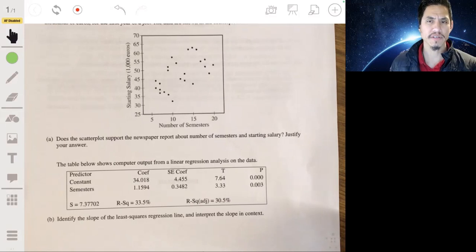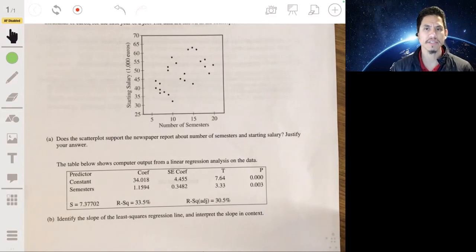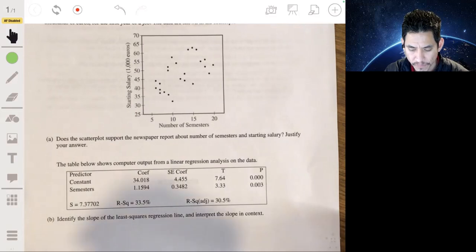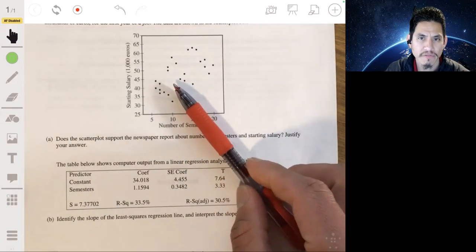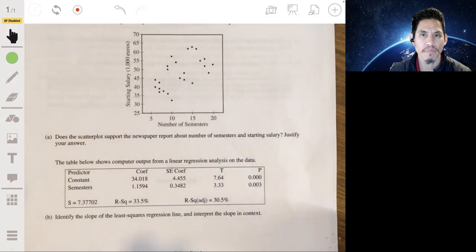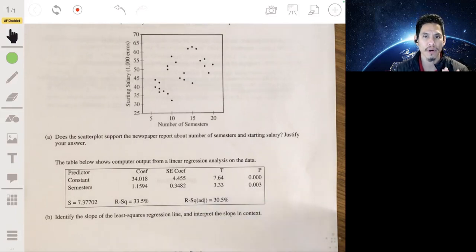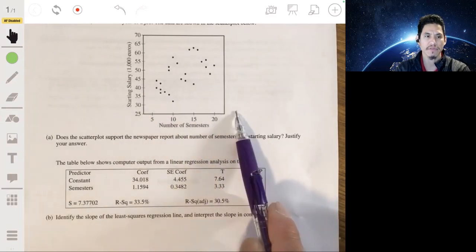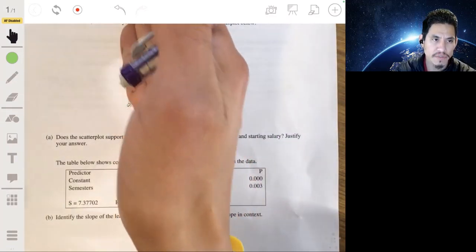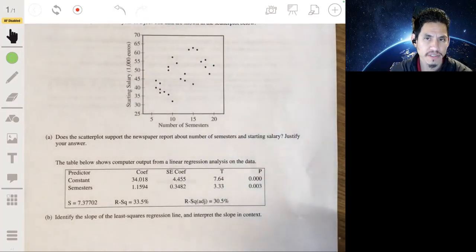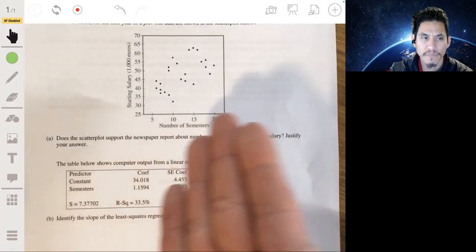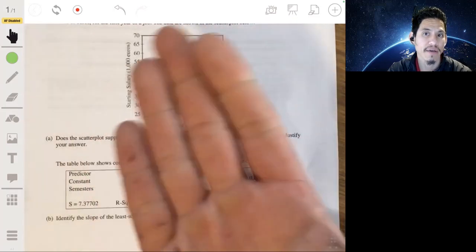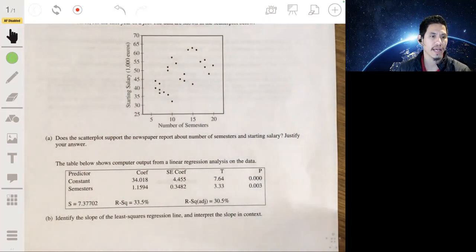All right, so essentially this is just assessing if you understand that this graph shows the trend or an association between two variables. We call the x variable the explanatory variable, and the y variable the response variable. So we want to see does the explanatory variable have some effect or does it appear to have an effect. And it seems that it does.